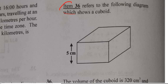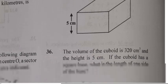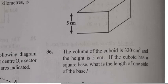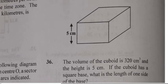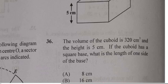All right, so looking at question 36, we have a cuboid. Let's see if we have any other information on it. It says the cuboid has a volume of 320 cubic centimeters and a height of 5 centimeters. If the cuboid has a square base, what is the length of one side of the base?